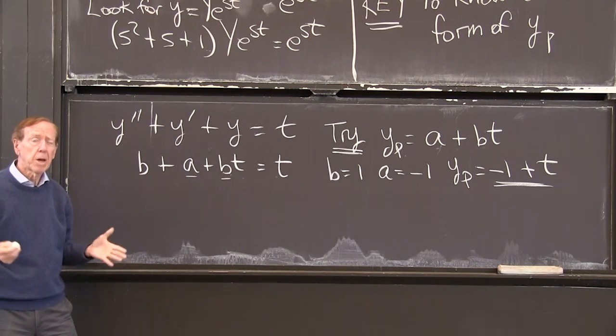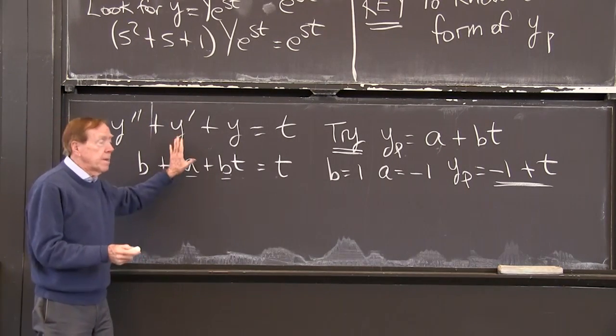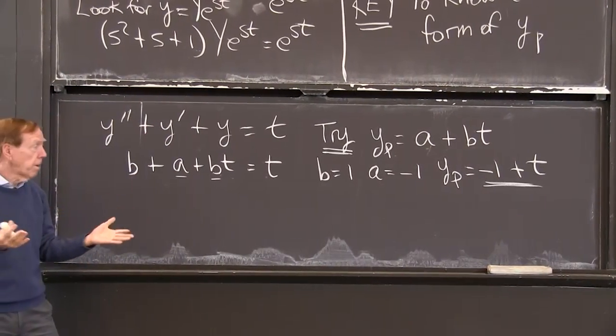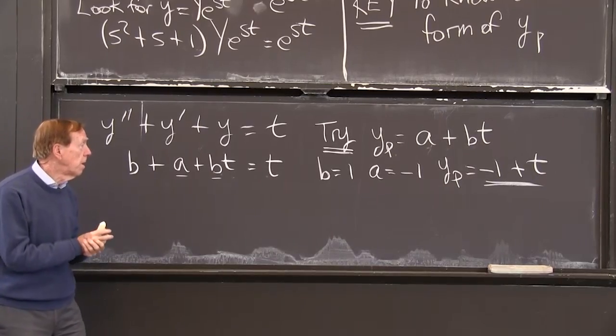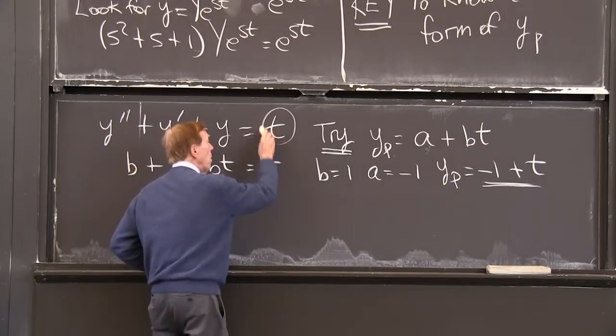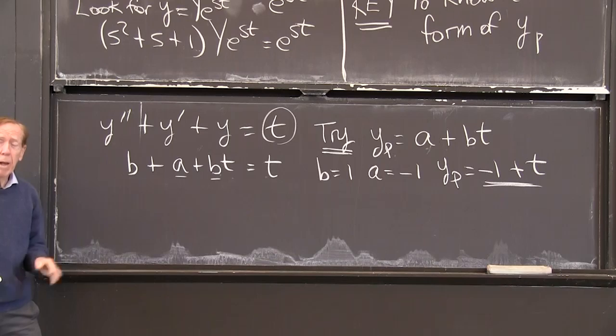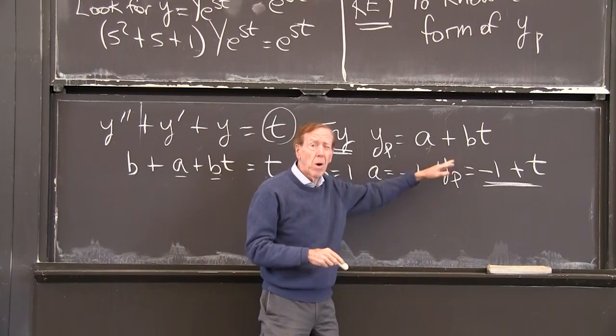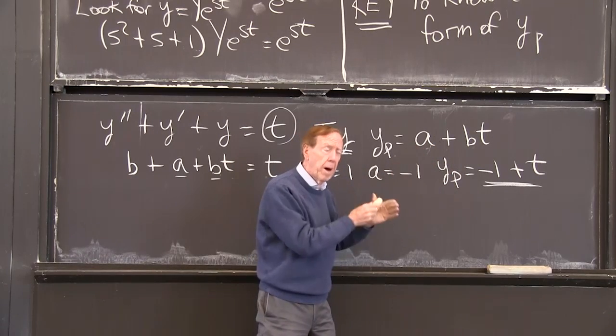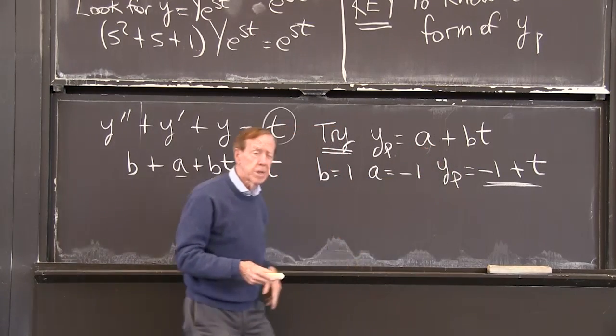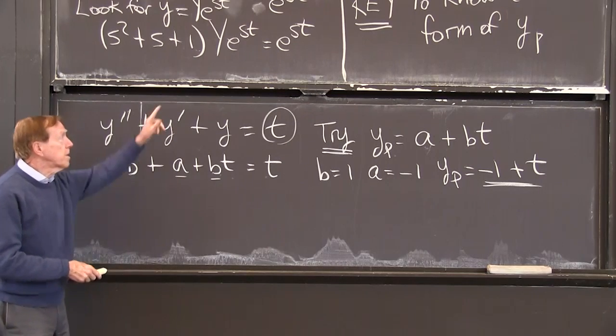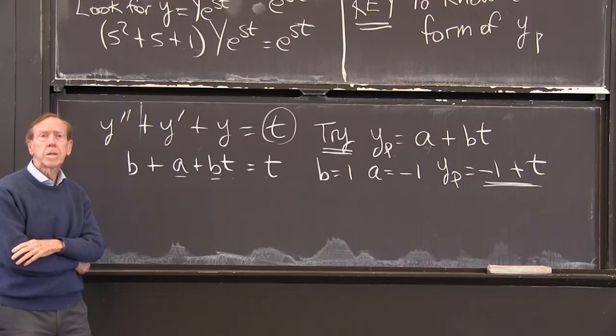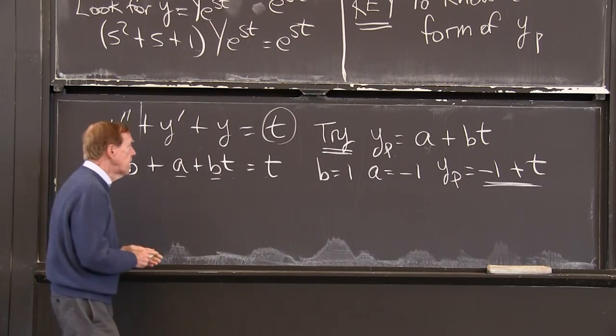And if I put that into the equation, it'll be correct. So I have found a particular solution, and that's my goal because I know how to find null solutions. And then together, that's the complete solution. So we've learned what to try with polynomials. With a power of t, we want to include that power and all lower powers, all the way down through the constants. With exponentials, we just have to include the exponential. What next? How about sine t or cosine t?